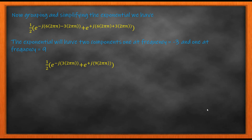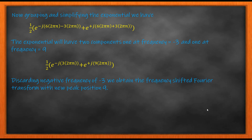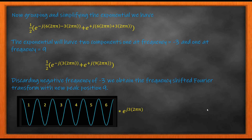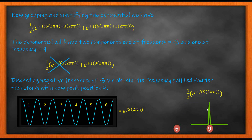Grouping the exponentials, I end up getting terms at minus j 3 and plus j 9. So after applying the frequency shifting, I end up getting frequency at minus 3 and plus 9. However, we don't take the negative frequency — we are plotting the Fourier spectrum in the positive frequency only, so we ignore the negative frequency. This means I get position 9 from the derivation. My original Fourier transform, which was at position 6, is now shifted to position 9 because I applied the frequency shifting property.